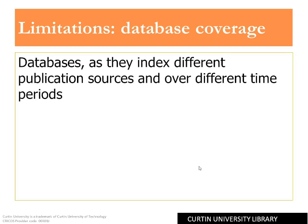Articles published before 1996 may not be included in the Scopus citation count. This means if you have a highly cited article prior to 1996, it may not be included in the count. See the information on calculating your H-Index in the Scopus tutorial for a workaround.